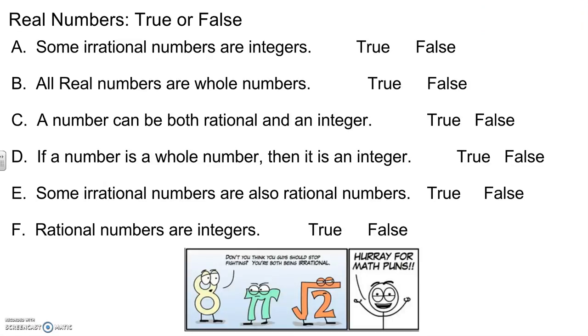Lastly we're going to look at real numbers and a couple of true or false statements. Some irrational numbers are integers true or false. False, irrational numbers cannot be integers because they cannot be expressed as a fraction. All real numbers are whole numbers. False again, whole numbers are a category of real numbers.